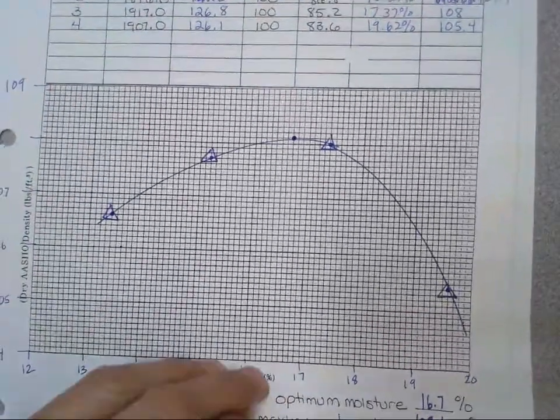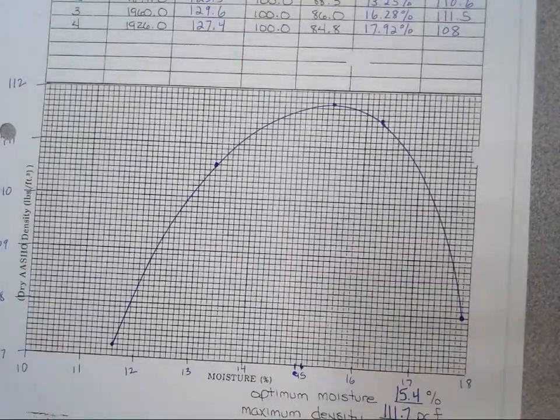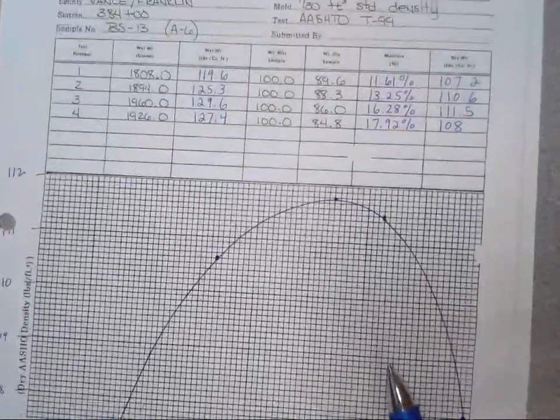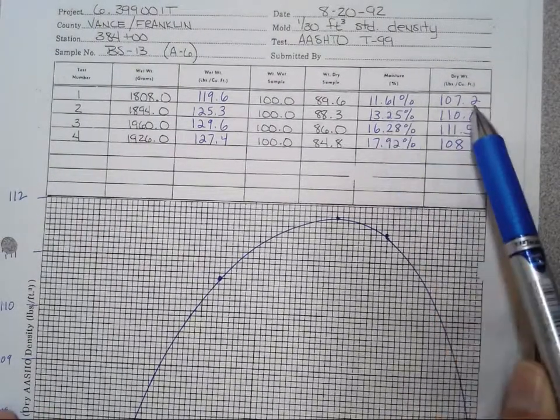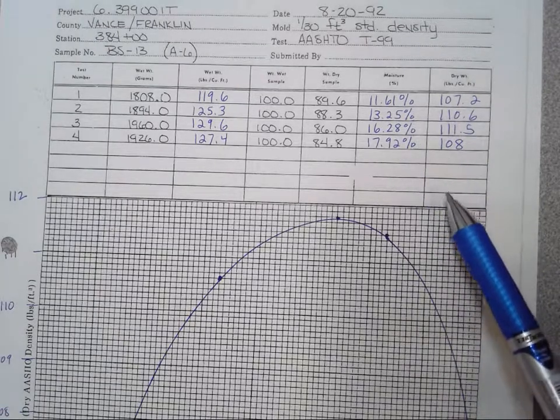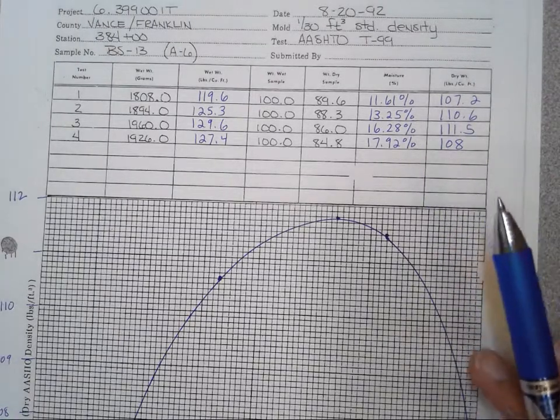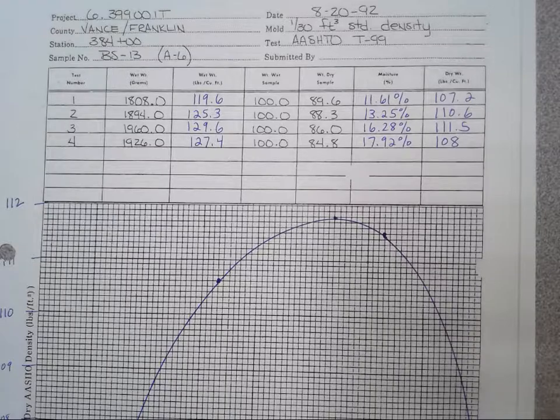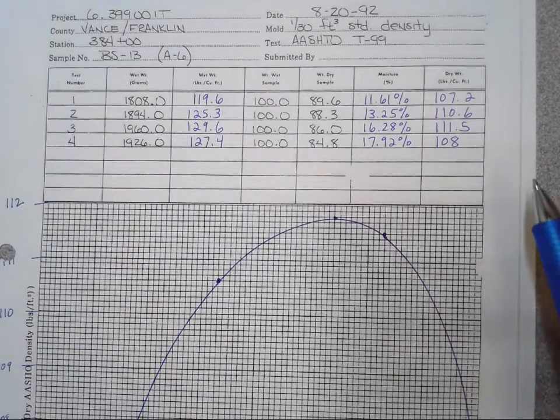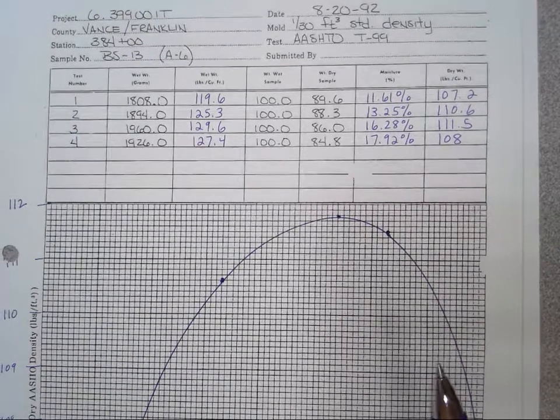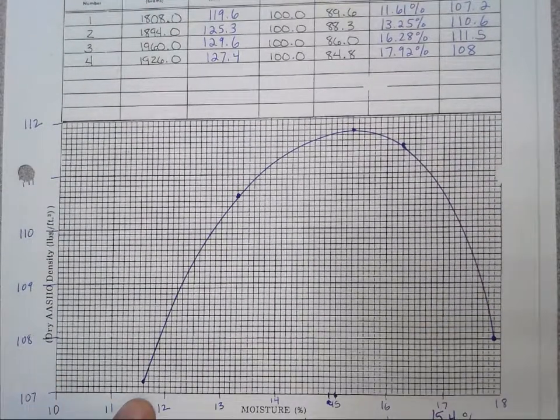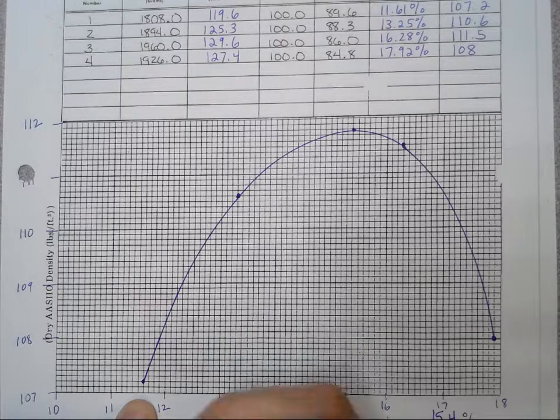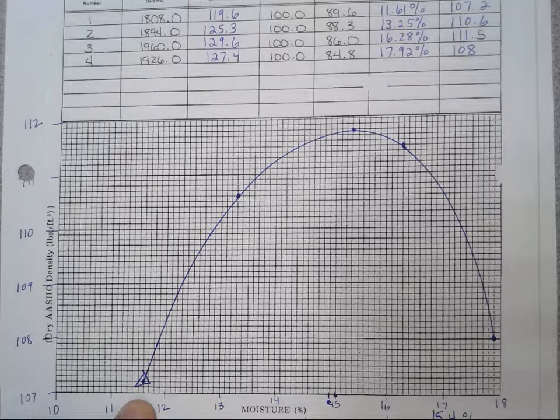All right, let's go on to BS13, and this one, again, here's our data. We have our moisture content and our dry density. Again, that's straight from my table. So, you know, if you're getting lost on those calculations, you can find all that information in the table. This video, I was just going to go over the graphing a little bit and what your shape should look like. So, here I have 11.61% and 107.2 was my first point that I put on there.